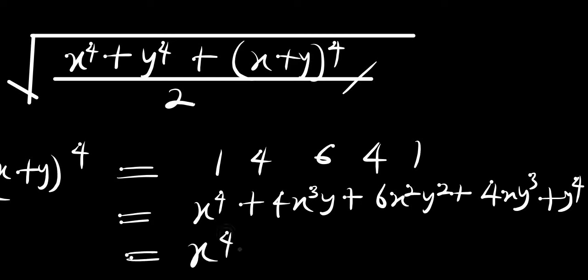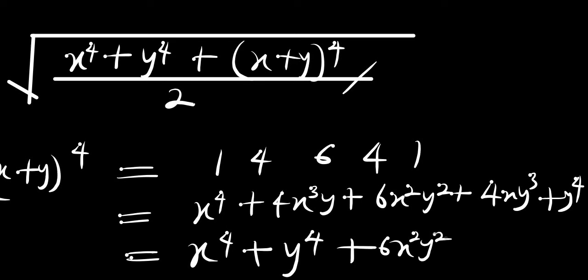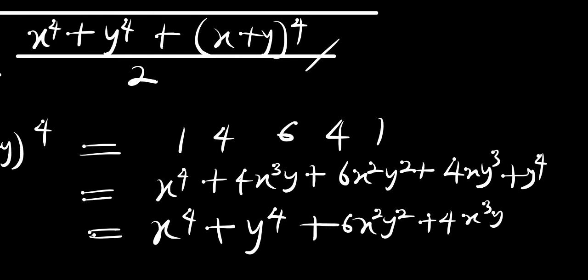So if we rearrange this we can have x power 4 plus y power 4 plus 6x squared y squared plus 4x cubed y plus 4xy power 3. We are just rearranging everything.